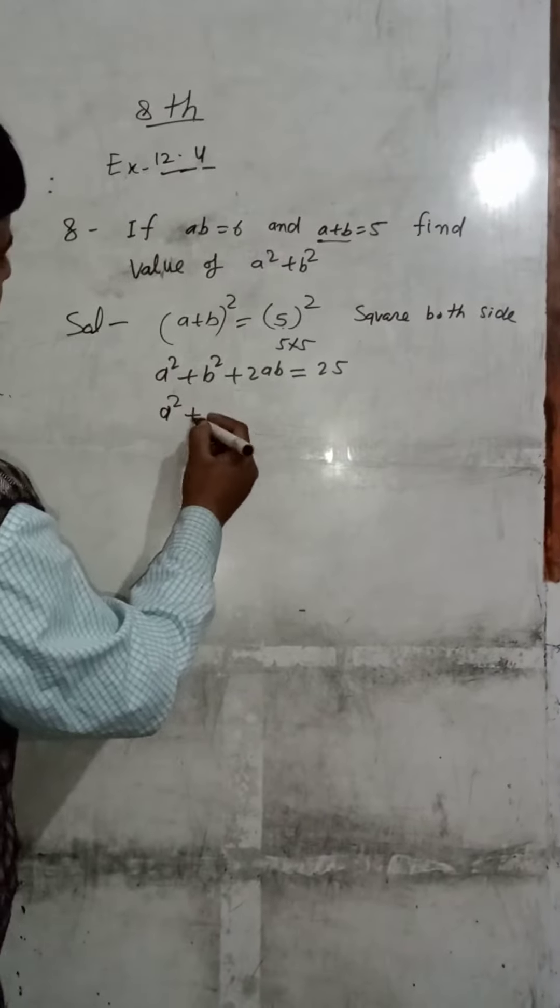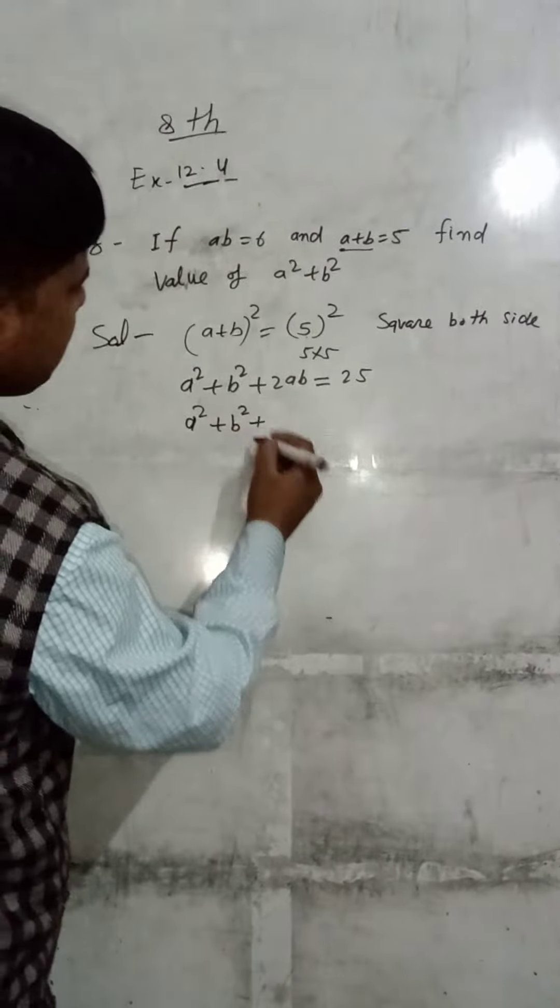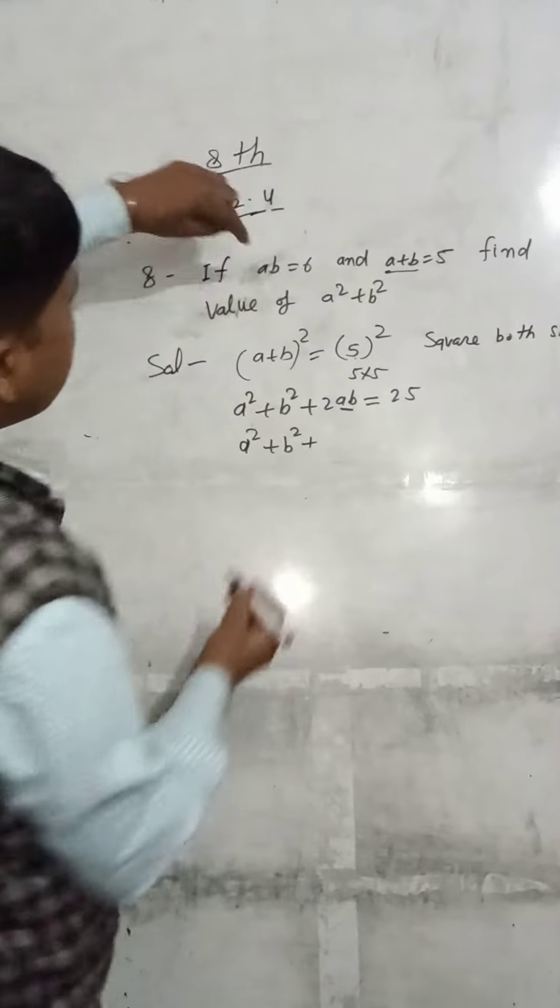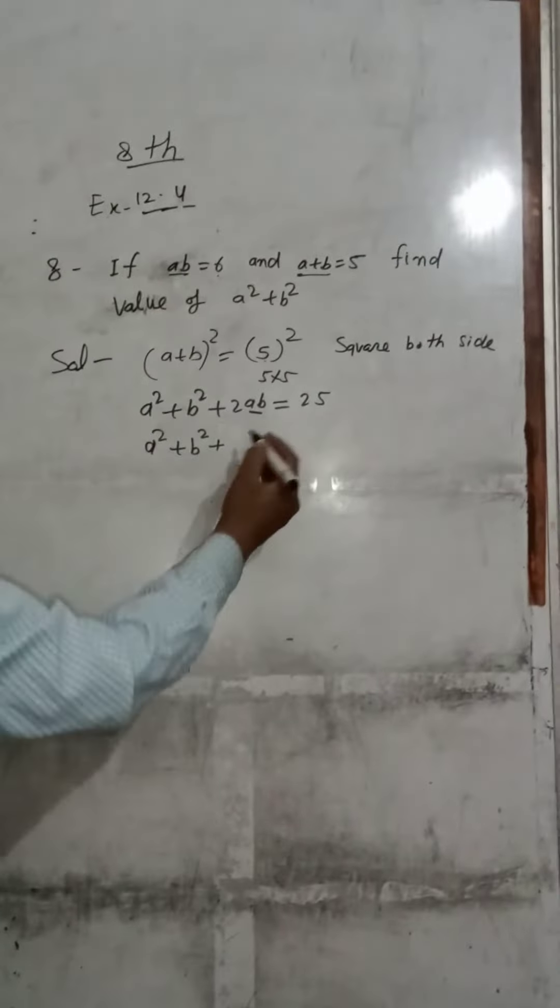A squared plus B squared plus AB. AB, AB. How do we do this?